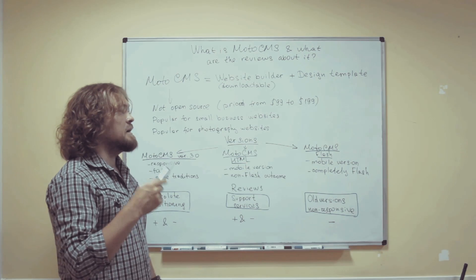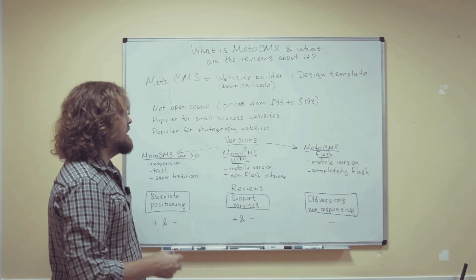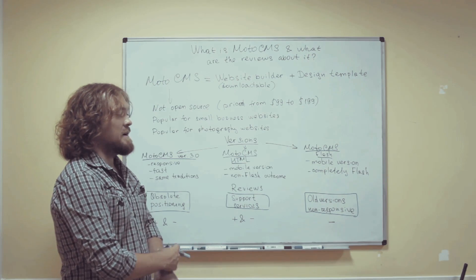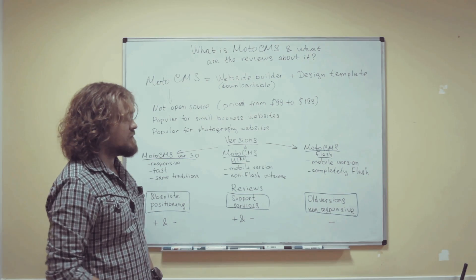There are three licenses available for Moto CMS, priced from $99 to $199. The oldest one and the cheapest one is the Moto CMS Flash version.